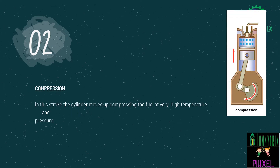The second stage is called as compression. In this stroke, the cylinder moves up compressing the fuel at a very high temperature and pressure. The same fuel that was taken in during the intake stroke will be compressed at a very, very high temperature and pressure. This complete process is called as compression, as you can see in the picture shown below.